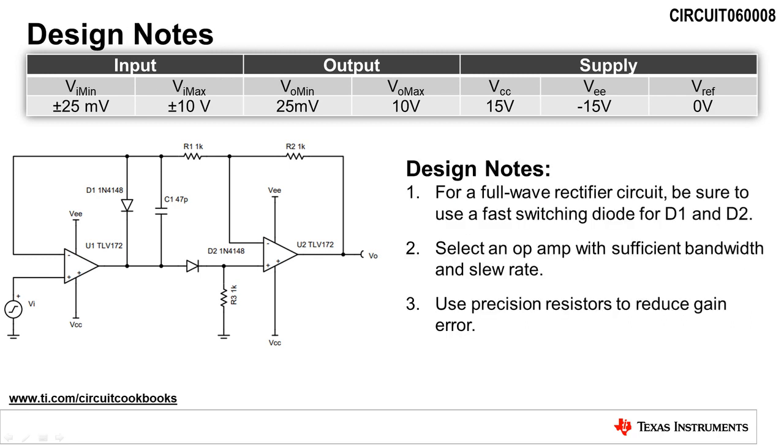When designing a full wave rectifier circuit, there are a few design notes to be aware of. First, be sure to use a fast switching diode for D1 and D2. Next, be sure to use an op amp with sufficient bandwidth and slew rate. Finally, use precision resistors to reduce the gain error of the circuit.